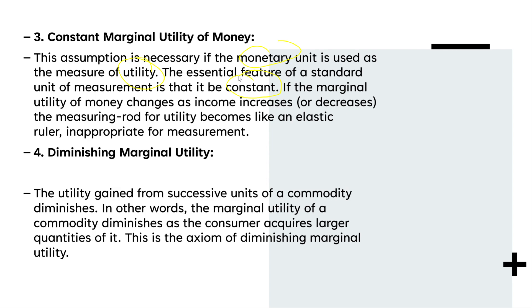If we use a unit of measurement, that unit must remain constant — just as one kilogram always equals one kilogram. This assumption is important because if the marginal utility of money changes as income increases or decreases, the measuring rod for utility becomes like an elastic ruler, which is inappropriate for measurement.